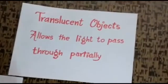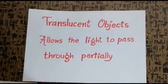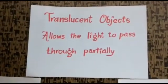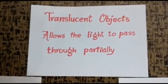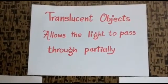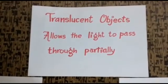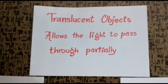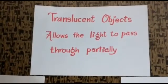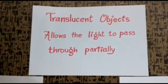After that, we learned about translucent objects that allow the light to pass through them but only partially. Examples are polythene, talc sheet, butter paper and tracing paper.